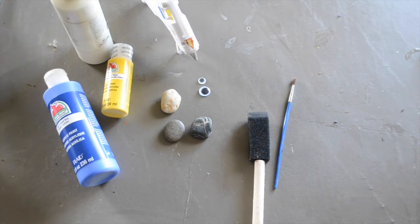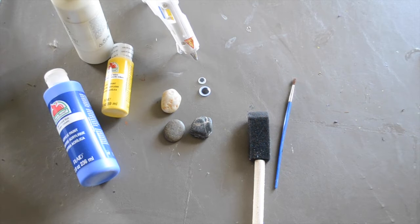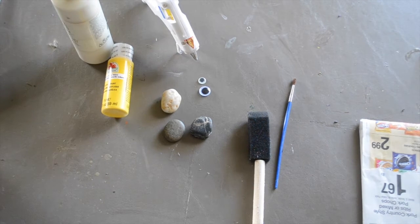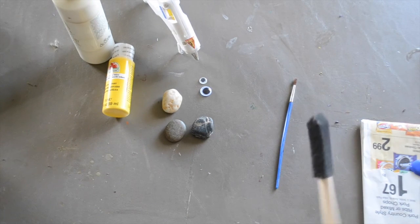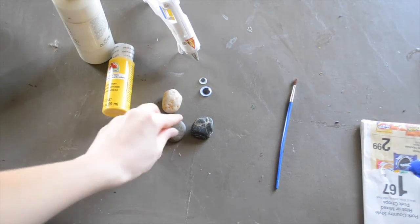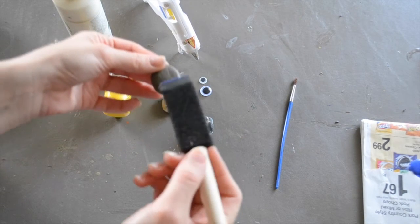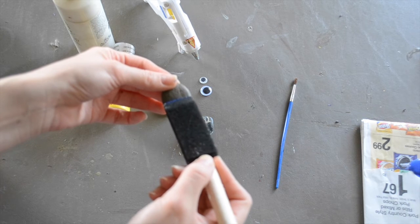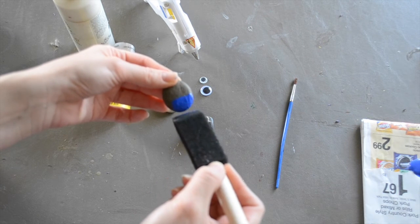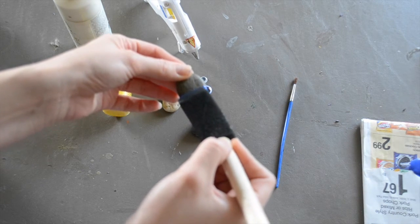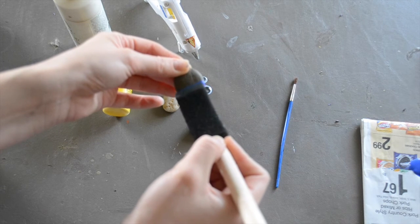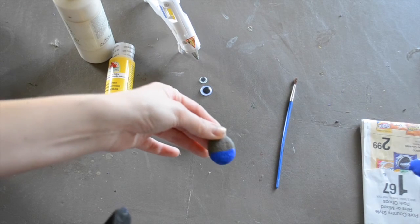So once you get all of the materials together, let's go ahead and get started. The first step in creating your little minions is painting a base layer of blue and yellow paint. So I'm going to go ahead and open up my paints. I'm going to use my foam brush to apply the first layer. The nice thing is that the foam brush is about the same width as these pebbles,